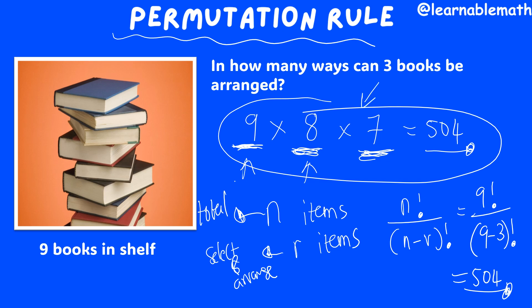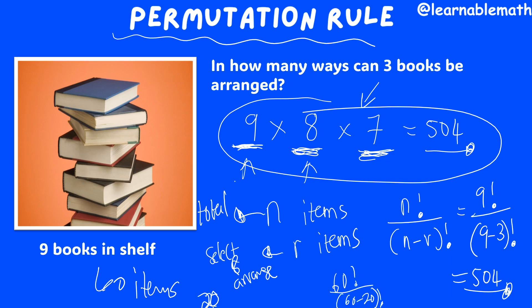This doesn't replace the normal counting approach — it's just that sometimes, what if I have 60 items and I want to determine how many ways I can arrange only 20 of them? I can't go and create 20 spaces, that would take a lot of time. We can simply use the permutation rule: 60 factorial over (60 minus 20) factorial.